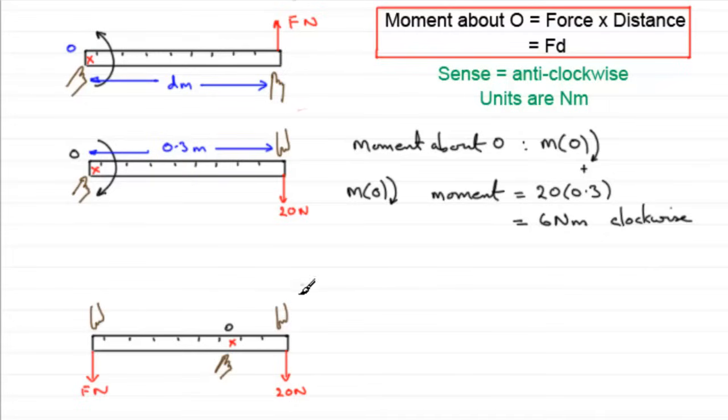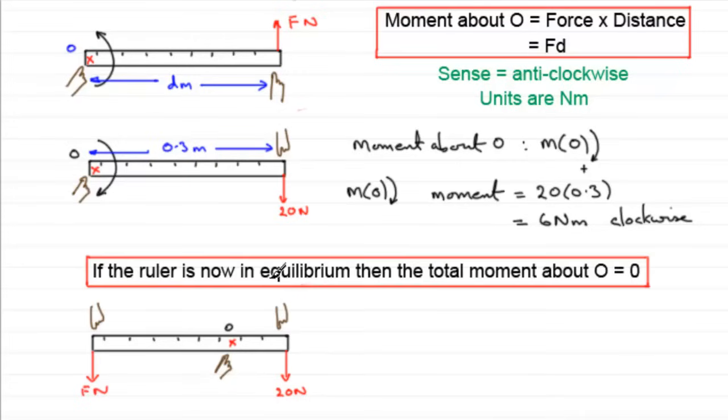So for this ruler to stay in equilibrium, then the total moment about O must equal 0. And this is a very important point that we'll discuss in other examples.